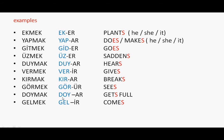Let's repeat these suffix forms with examples one more time — he, she, it forms. Don't forget: O eker, yapar, gider, üzer, duyar, verir, kırar, görür, doyar, gelir.